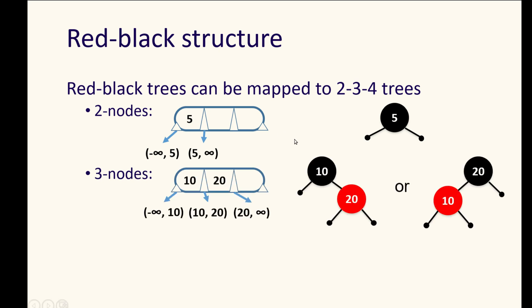A three node is a black and red pair in either direction, a black node parent of a red node child, or I'm sorry, a black node parent with a right red node child, or a black node parent with a left red node child.